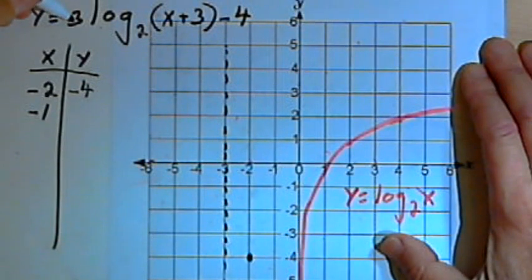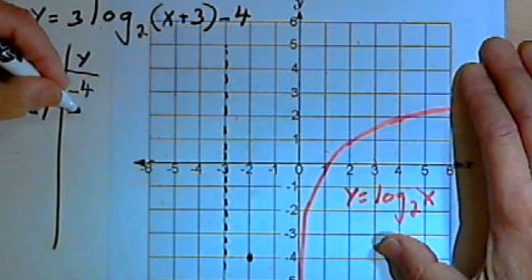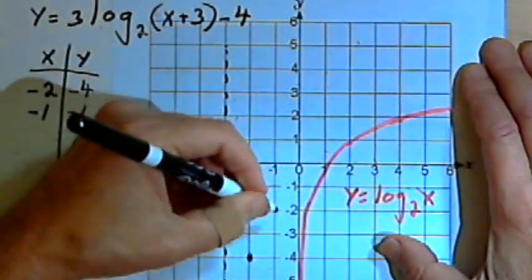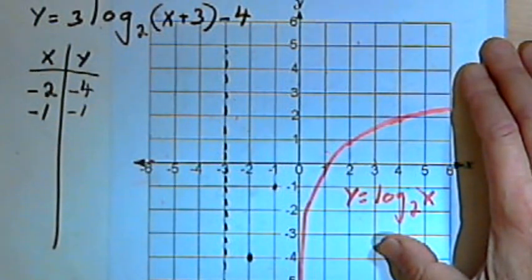multiply that by 3, that's a 3, subtract 4, and I'll get a negative 1, which means I have a point at (-1, -1).